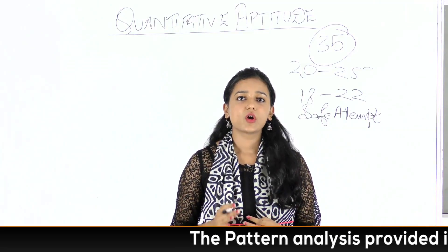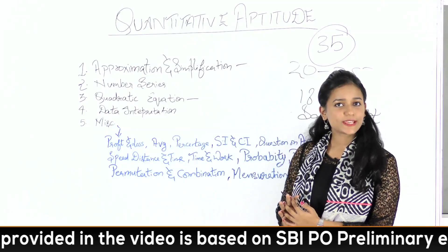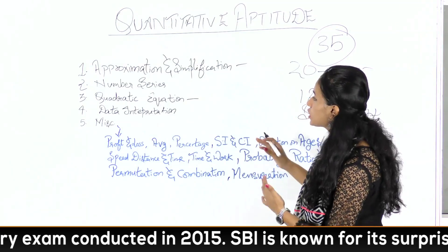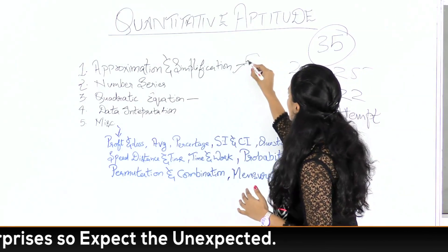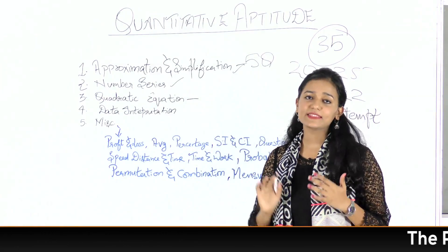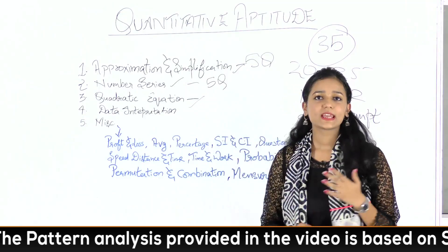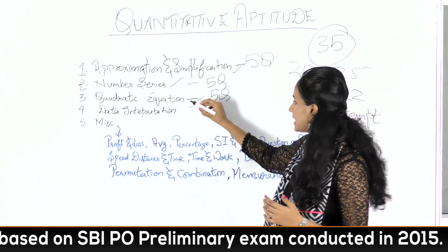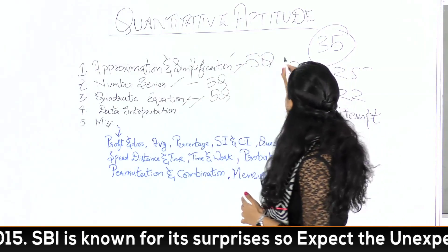Now let's look at the topics and how many questions will be asked from each in Quantitative Aptitude. The first topic is Approximation and Simplification, worth 5 marks — 5 questions. Next is Number Series, also 5 marks. Then Quadratic Equation, also 5 marks. Note that if Quadratic Equation is not asked, they may increase questions from Approximation and Simplification, but you need to prepare all of these topics.